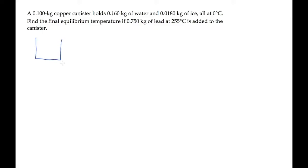The copper canister in this problem has a mass that we're given, and is filled with a mass of water and some ice, all of which is at the common temperature of zero degrees Celsius. And then a piece of lead is added. The lead's initial temperature is 255 degrees Celsius, and we're asked to find the common final temperature when everything is in equilibrium.